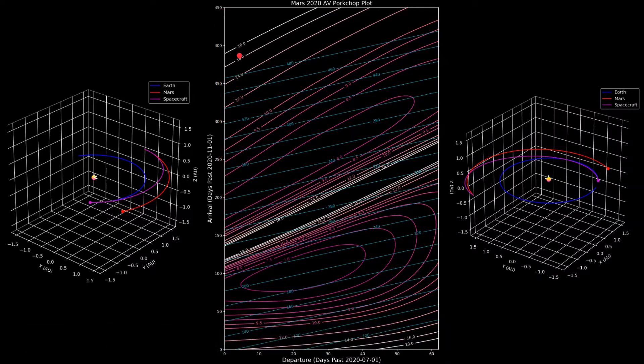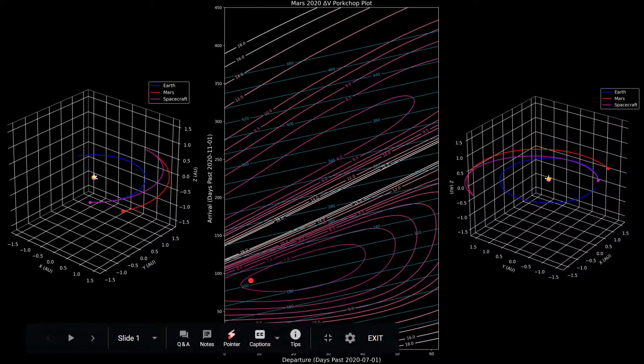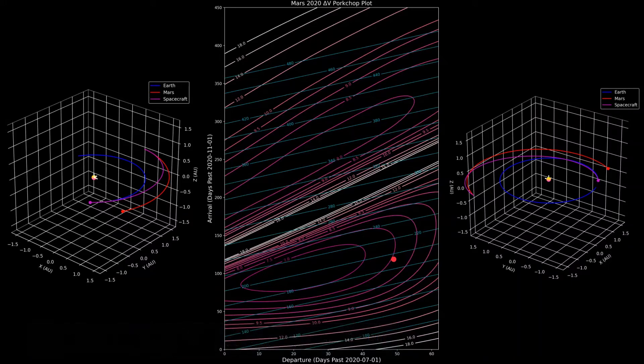The blue lines in this plot represent constant travel times. So say along this blue line right here that's labeled 200, as you go along it, every single trajectory along that line will have a travel time of 200 days from Earth to Mars.